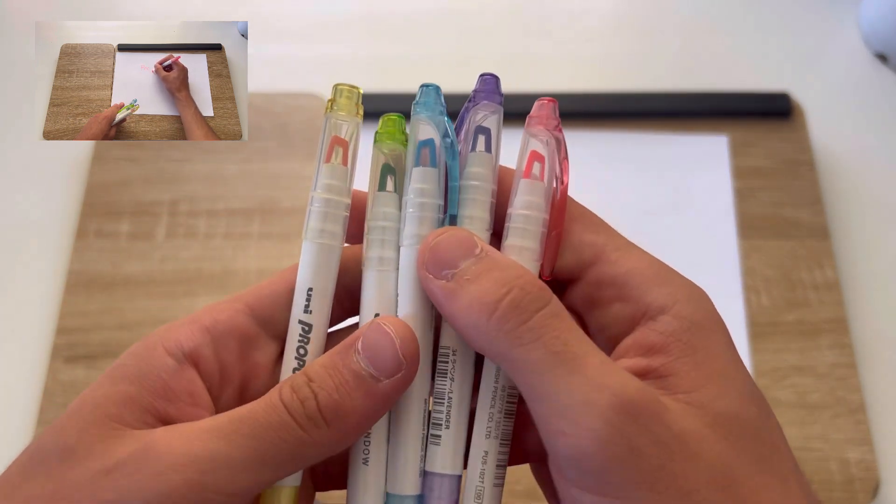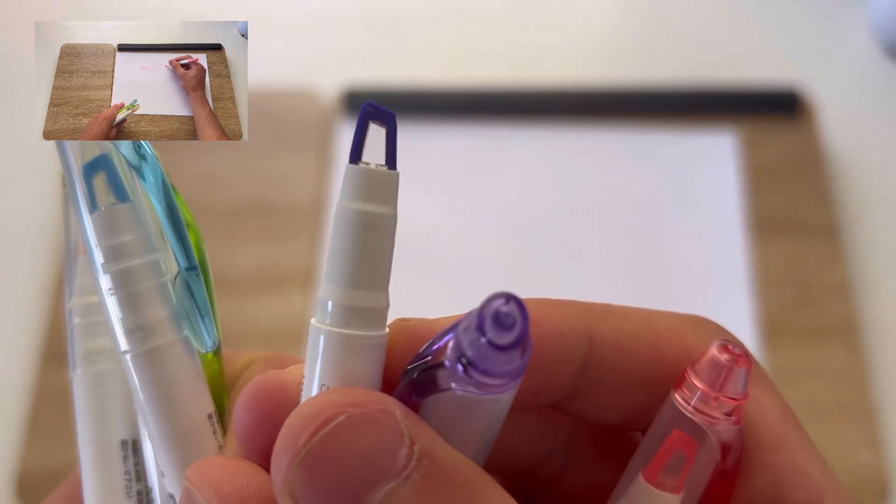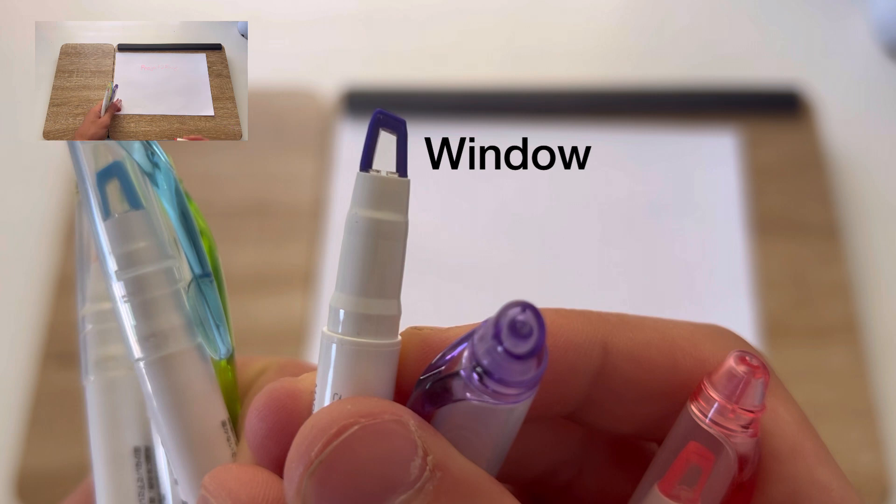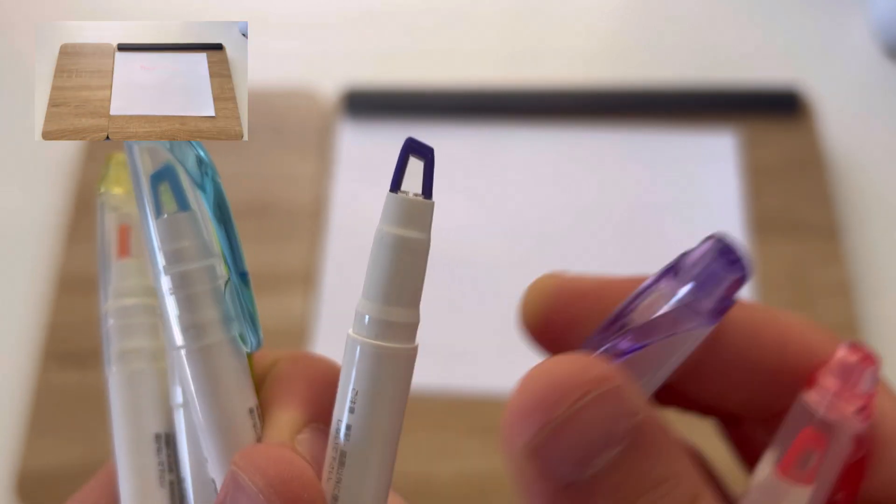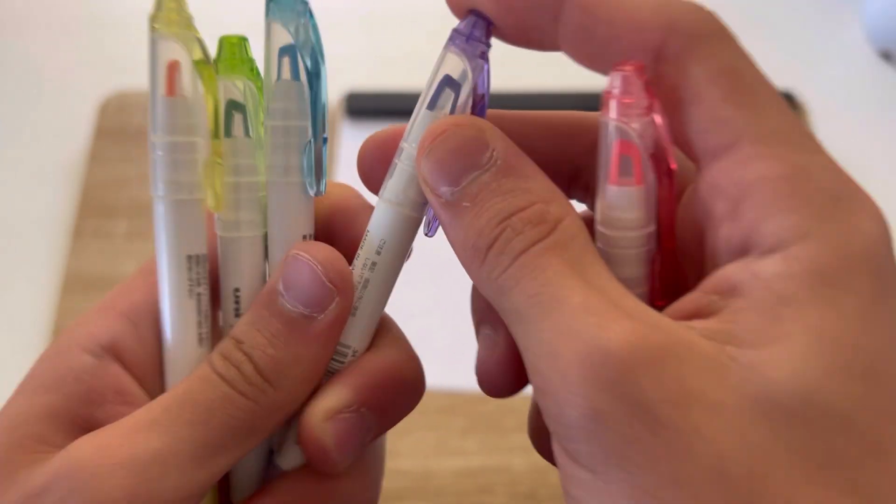Another good thing about these highlighters is that there's a window at the tip of the pen to make it easier to see what you're highlighting. This also means that they take an astounding eight hours to dry when left out without a lid.